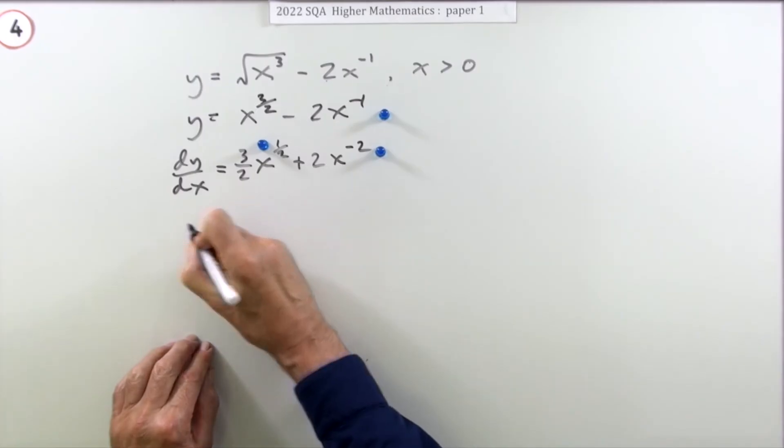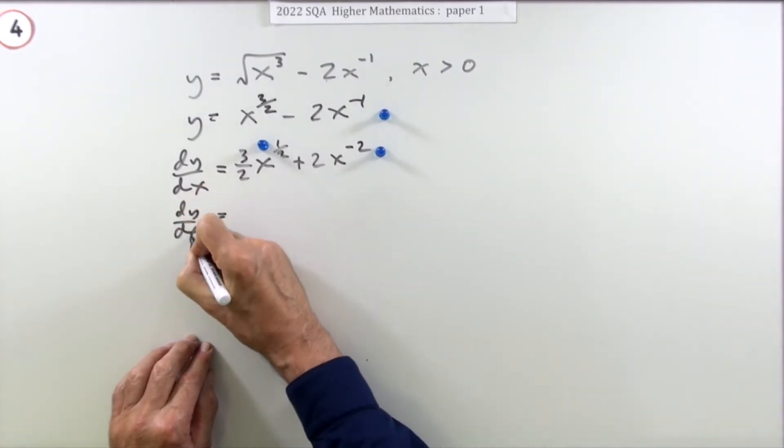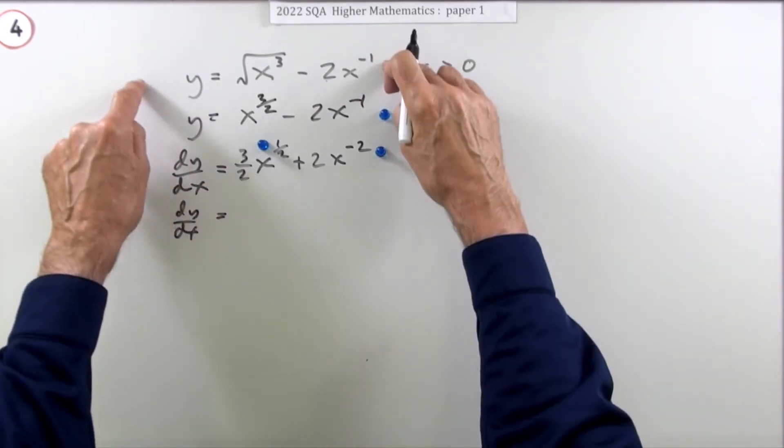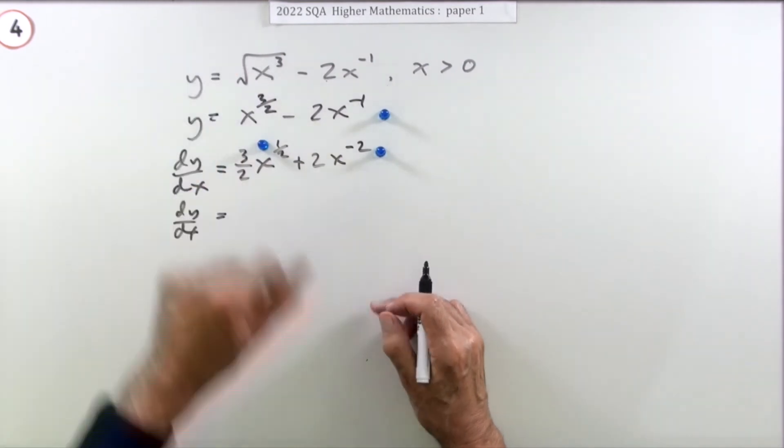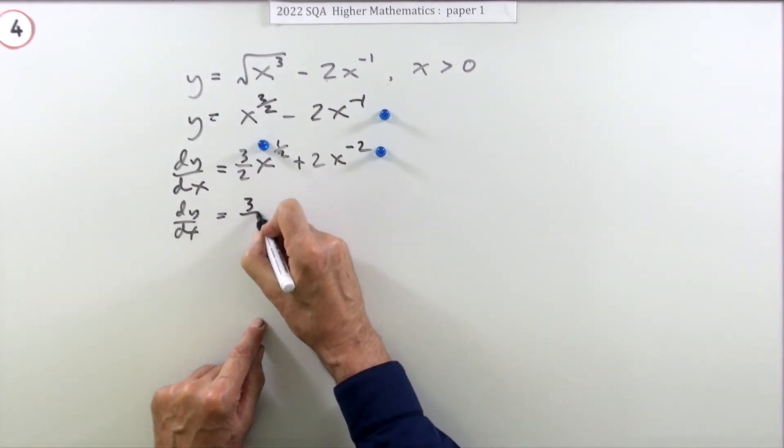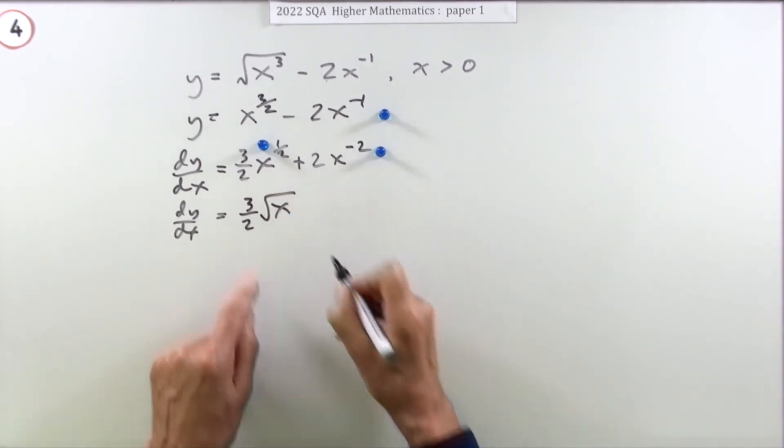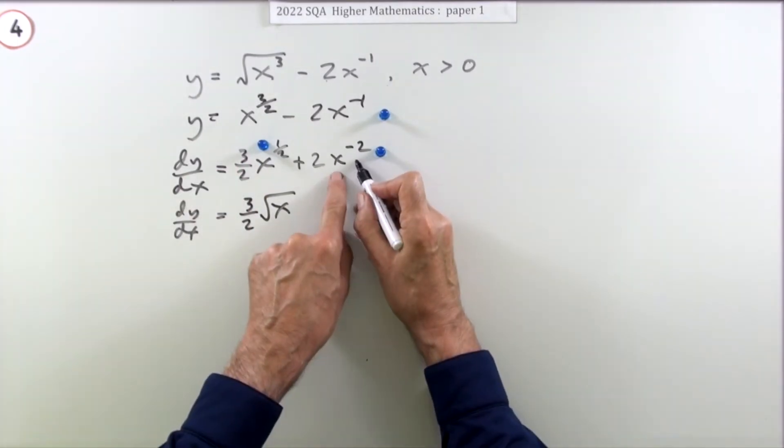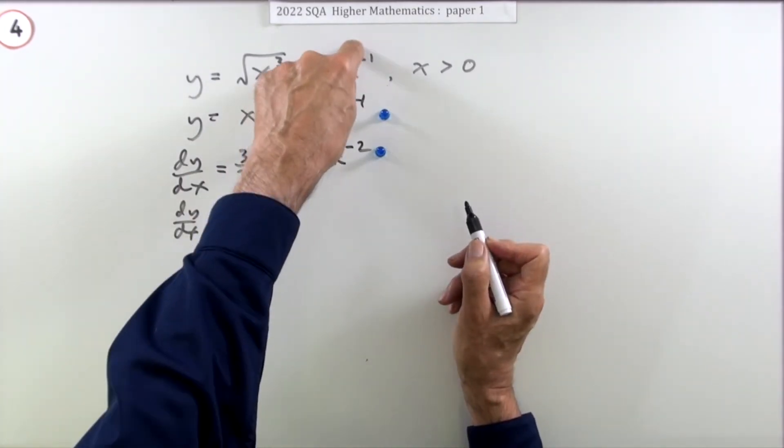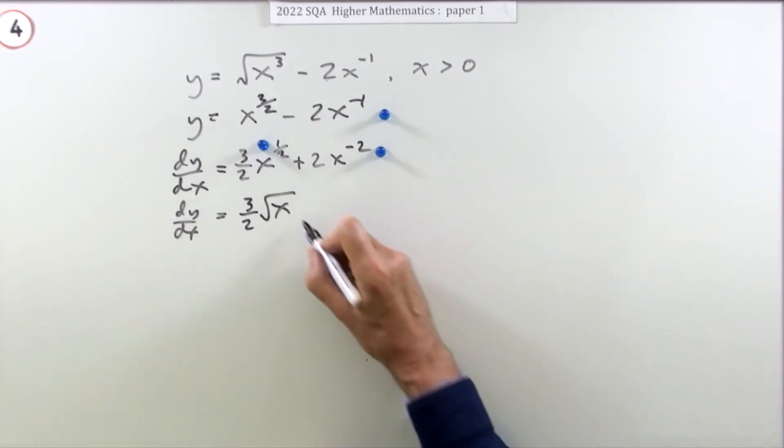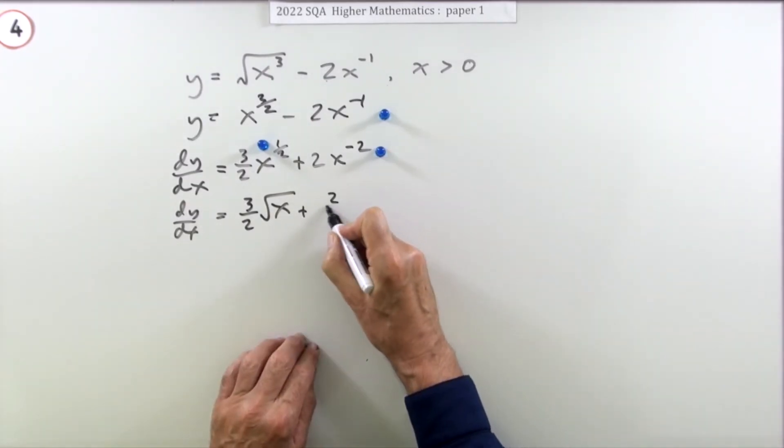Whereas I'd have thought you'd have had to finish that off by putting it back the way you found it. Now you found it with root signs. So I'd have thought you'd have had to finish it off by saying, well that's root x. And maybe just leaving that as power negative 2 because I found it with negative powers. Or if I wanted to be fancy I could say what that is.